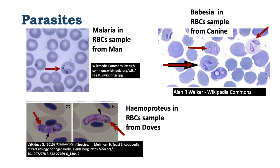Parasites may sometimes occur in the red blood cells. An example is malaria in man. Going anticlockwise at the bottom, we see Haemoproteus occurring in red blood cells of the dove, and on the far right we see Babesia occurring in canine red blood cells.